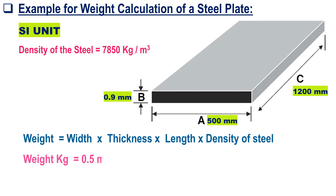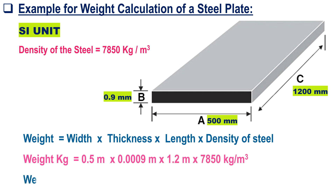Therefore, weight in kg equals 0.5 meter, multiplied by 0.0009 meter, multiplied by 1.2 meter, and multiplied by 7850 kg per cubic meter. So the weight equals 4.24 kg.